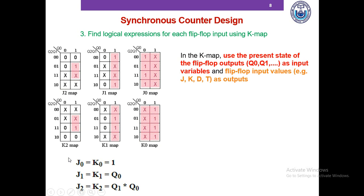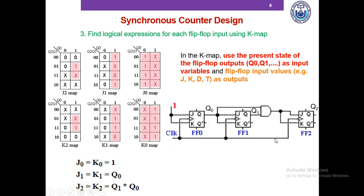Once we have these expressions, we have our combinatorial circuit needed to design our 3-bit up counter. We then just draw the circuit. Flip-flop 0 outputs Q0, flip-flop 1 outputs Q1, and JK flip-flop 2 outputs Q2. The count is Q2, Q1, Q0 where Q0 is the rightmost bit.